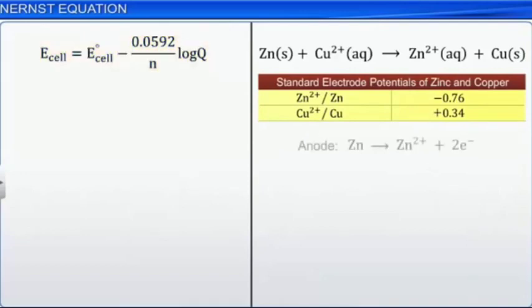From the half reactions, we see that two electrons are transferred in the overall reaction. Therefore, N equals 2.